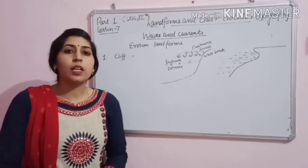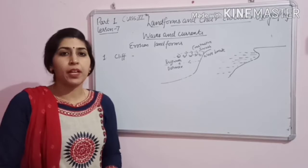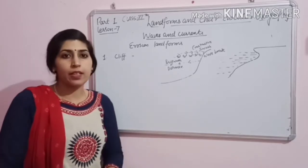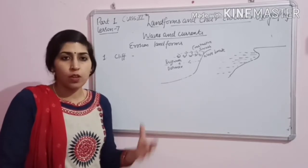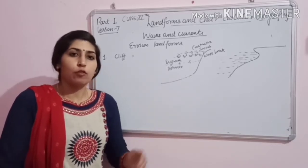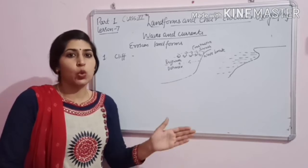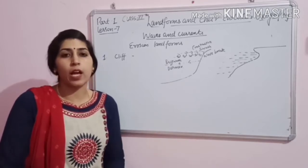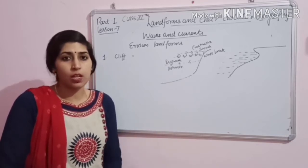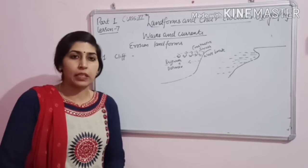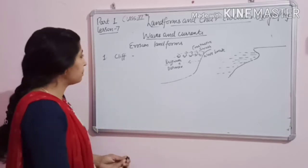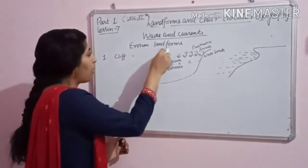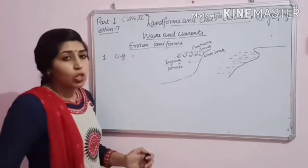After the glacial landforms, we will read about ocean currents and waves. Ocean currents and waves — they also create coastal landforms. There are some erosional and depositional landforms made by them. Let's read them. So, erosional landforms by the waves and currents.